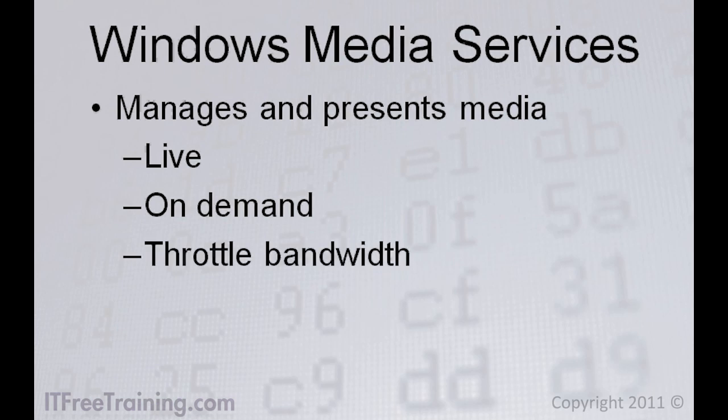On a traditional website, the user clicks a link and the file is downloaded to their computer. The file size is fixed and they cannot watch any of the content until the completed file has downloaded. Using Windows Media Services, the user can start viewing the content straight away and the data rate can be changed according to the speed of their internet connection, which better uses your bandwidth on your network.